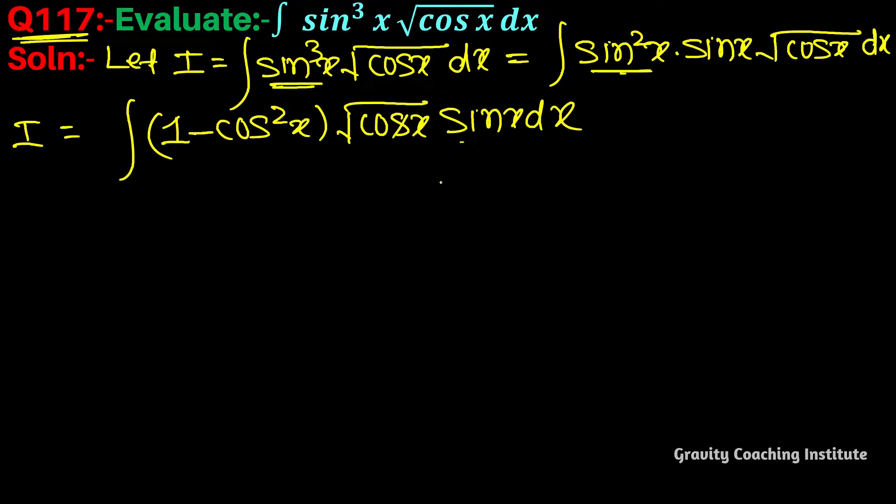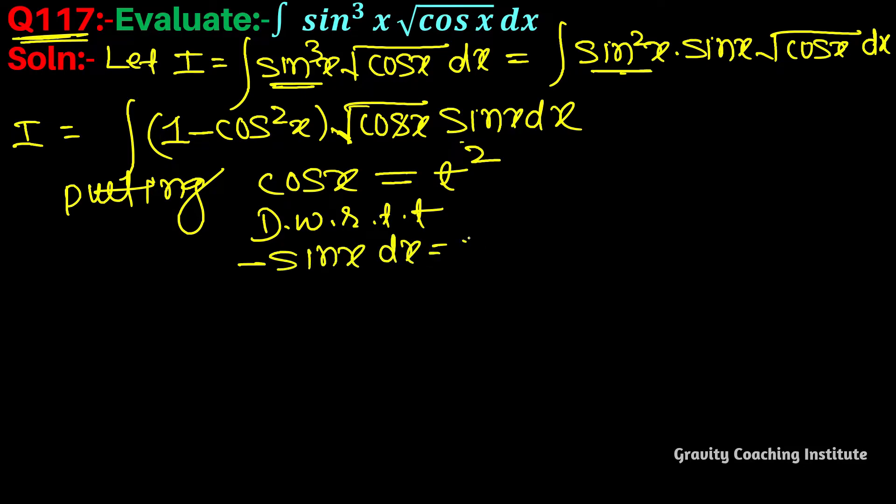We can put cos x equal to t². Differentiating cos x with respect to t: the differentiation of cos x is minus sin x, and t² gives 2t, so sin x dx equals minus 2t dt.